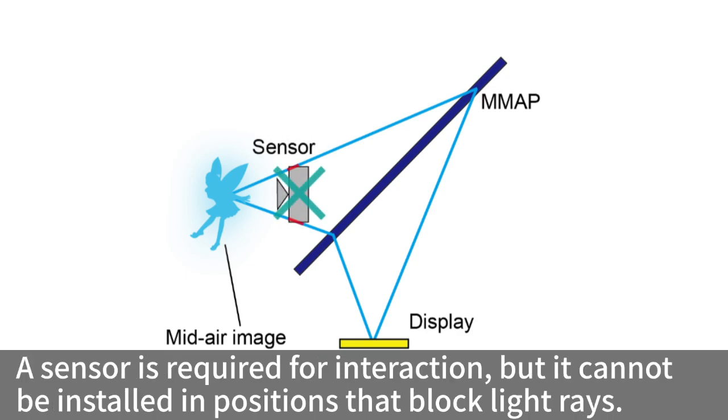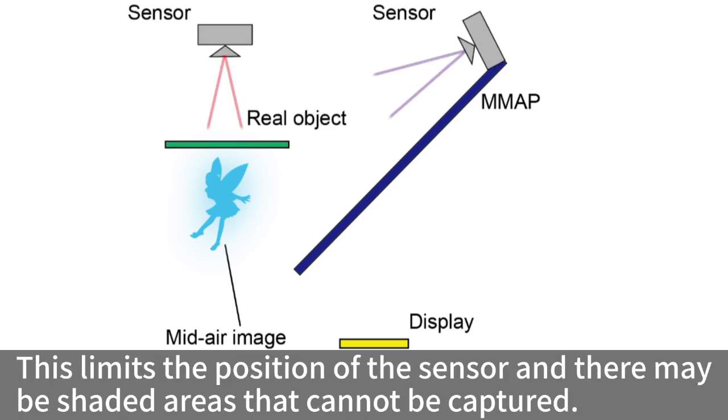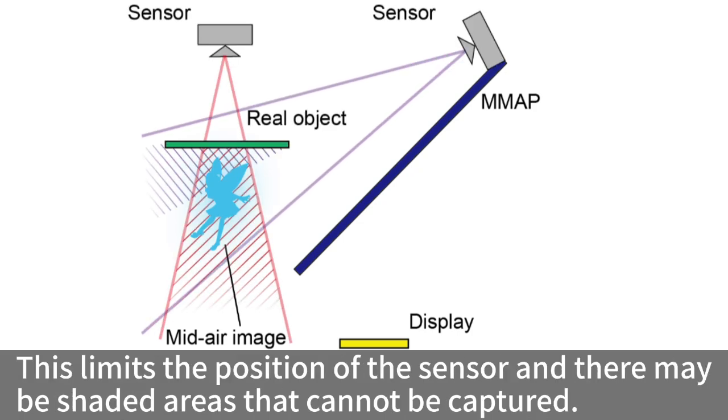A sensor is required for interaction, but it cannot be installed in positions that block light rays. This limits the position of the sensor and there may be shaded areas that cannot be captured.